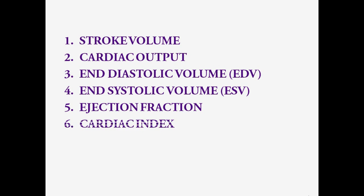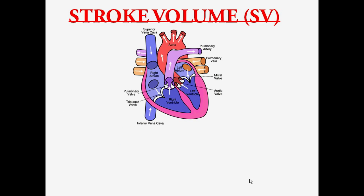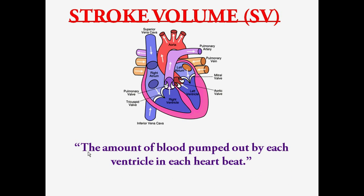These topics are also very helpful in pathology and medicine. The first topic is stroke volume. Let's have a quick revision of a few basic points. The diagram you see here is the heart with two atria and two ventricles. The right ventricle pumps blood into the pulmonary artery and the left ventricle pumps blood into the aorta.